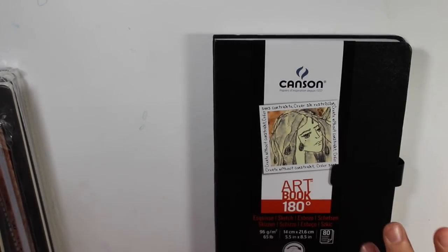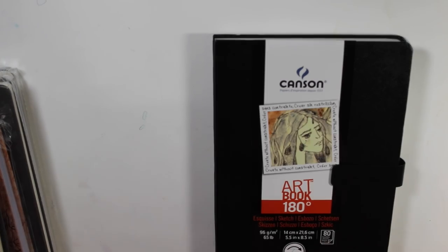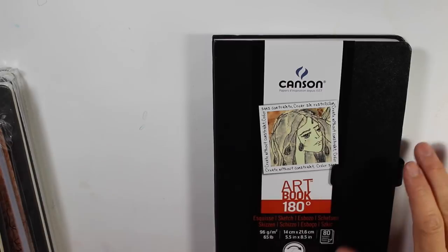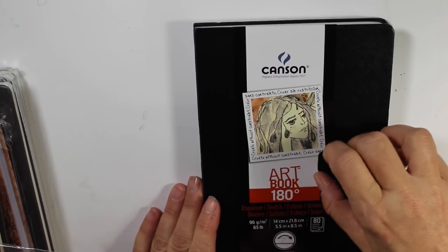Okay, this I got for, I opened it. It's a Canson and this was $21. I got this for five. This is really nice. This is an art book 180. It's got a magnet clasp and you know, the paper is okay in this.